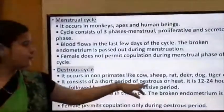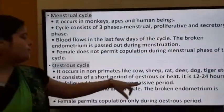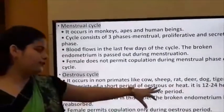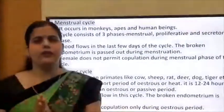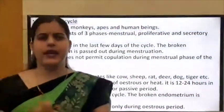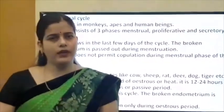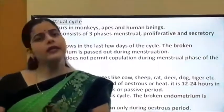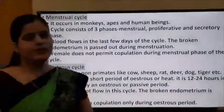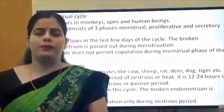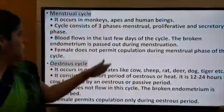The oestrous cycle comes with a short period of oestrus or heat phase — it is 12 to 24 hours in the cow. Blood does not flow in this cycle; instead it is reabsorbed inside the body. The female permits copulation during the oestrus period.